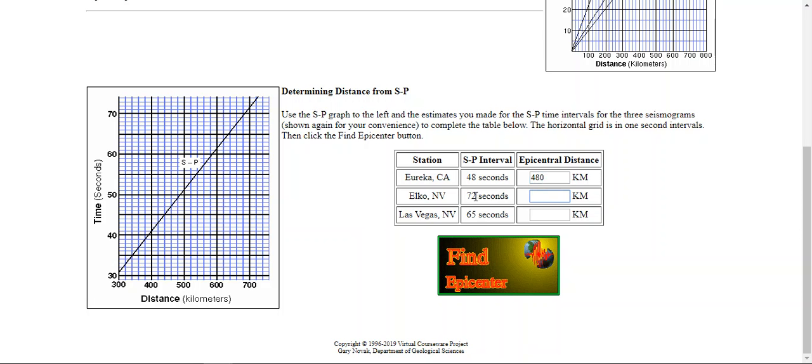Same thing with the 72 seconds. Where does it cross over? At 700 kilometers. And lastly, in Nevada, Las Vegas, 65 seconds—just under 640. So let's put 638.